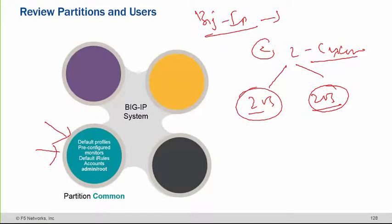To separate those roles, you need to create different partitions and then assign each user to their own partition, so they can only look at that partition and cannot look at others. By default in F5, the common partition is visible to all customers — you can set it as read-only — but any partition created for a different user by a different administrator cannot be seen by others.